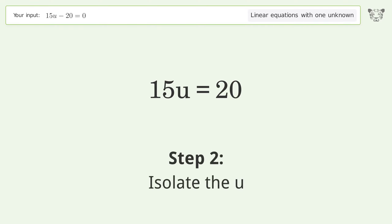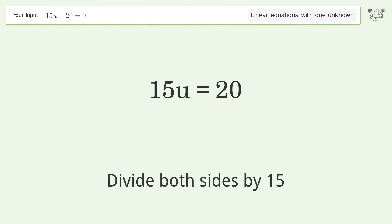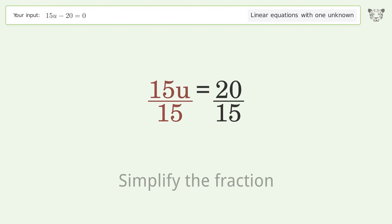Isolate the u. Divide both sides by 15. Simplify the fraction.